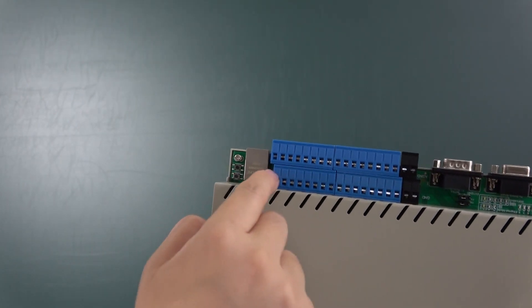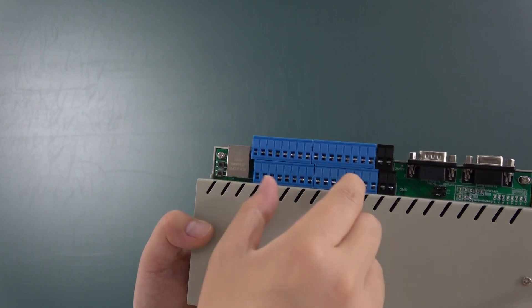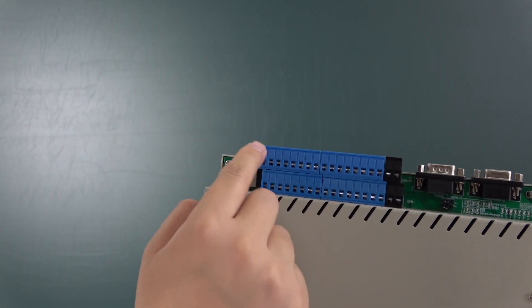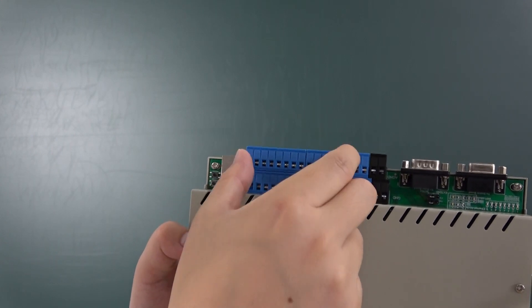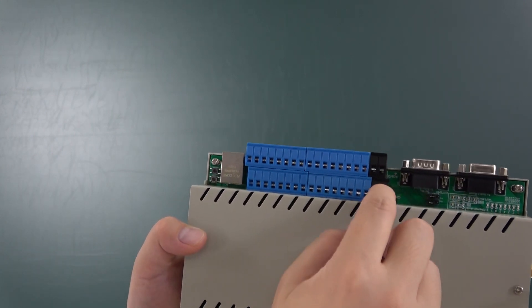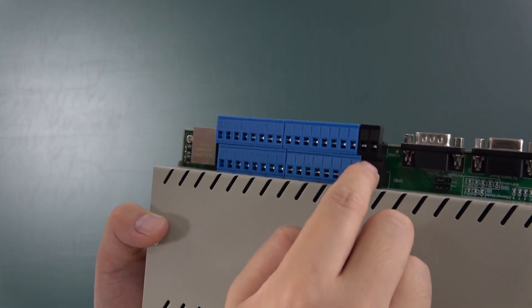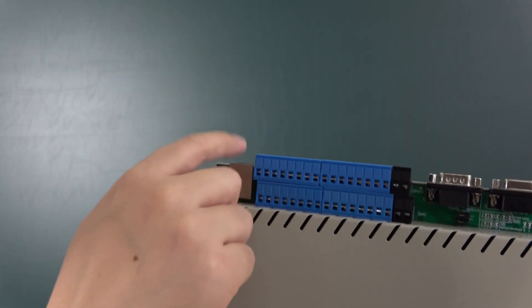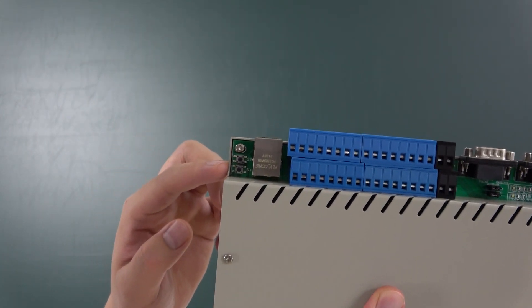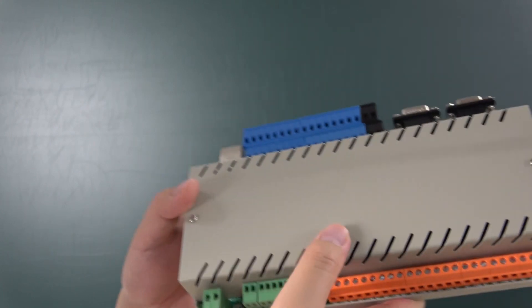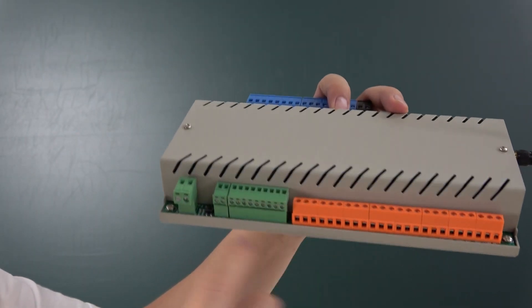And this is digital 1 to digital 6 input. And this is analog input from 1, 2, 3, 4 until 16 channels. This black is ground, this is analog ground, and this is digital ground. And this is network cable. And this is the button for Wi-Fi and Ethernet setting.